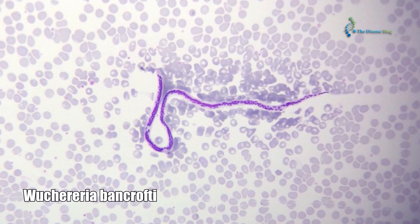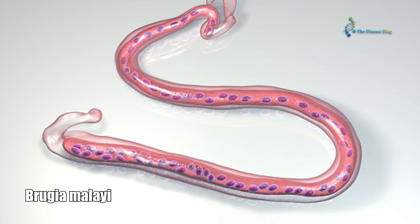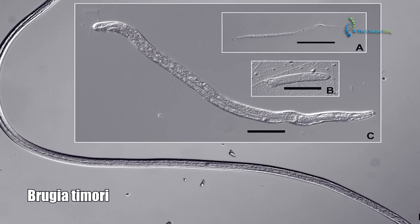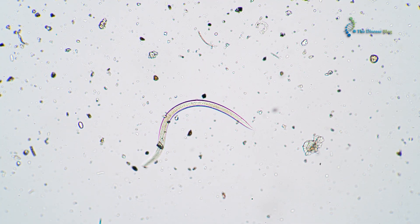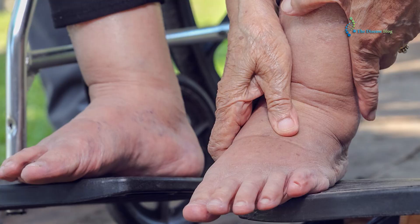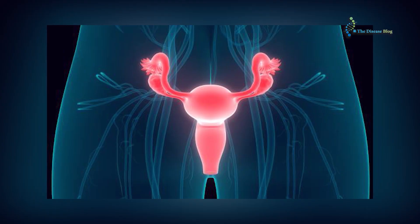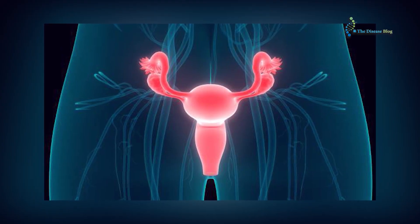Filarial worms live inside mosquitoes, and when an infected mosquito bites humans, the worms are transferred from the mosquito to a healthy human. These worms belong to the family Onchocercidae, and only three of them, such as Wuchereria bancrofti, Brugia malayi, and Brugia timori, are reported to be responsible for causing elephantiasis.